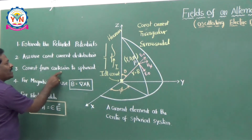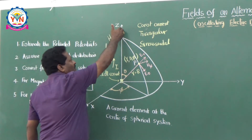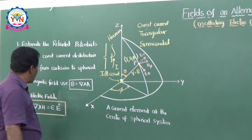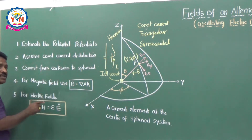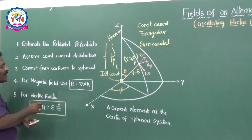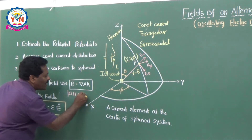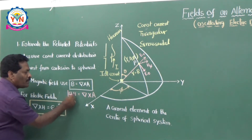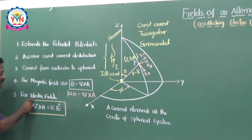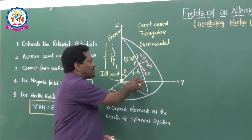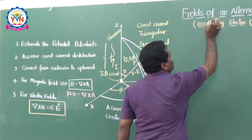The third step is to convert from Cartesian to spherical coordinate system, because I am initially writing equations in Cartesian coordinates but finally must convert to spherical coordinate system as the derivation will be much easier. The fourth step is for magnetic fields: once the potential is known, you can write down the field expressions using B = ∇ × A. Since B = μH, we get H = (1/μ)(∇ × A). Similarly, using Maxwell's equation ∇ × H = ε(∂E/∂t), E can be calculated.